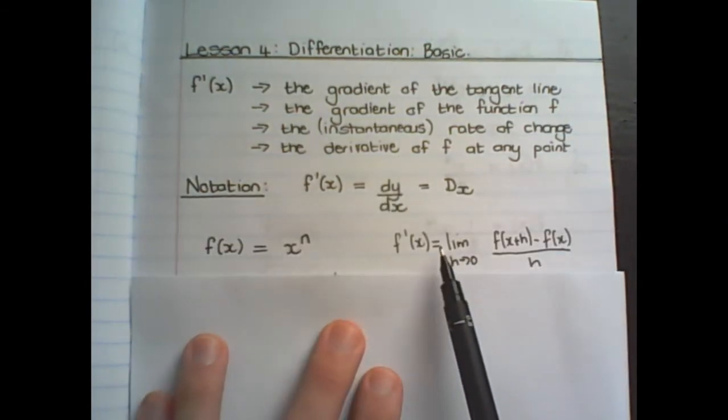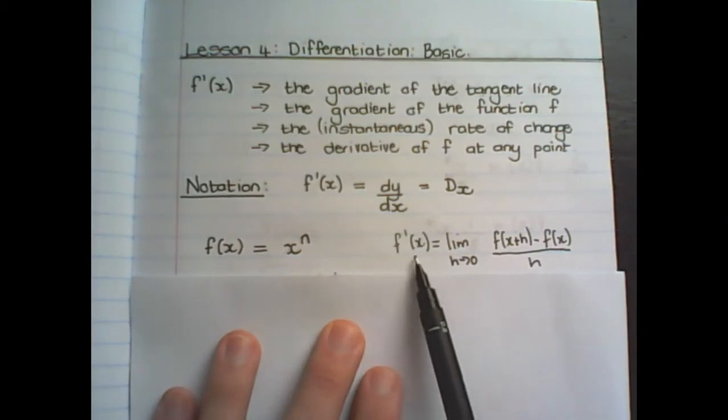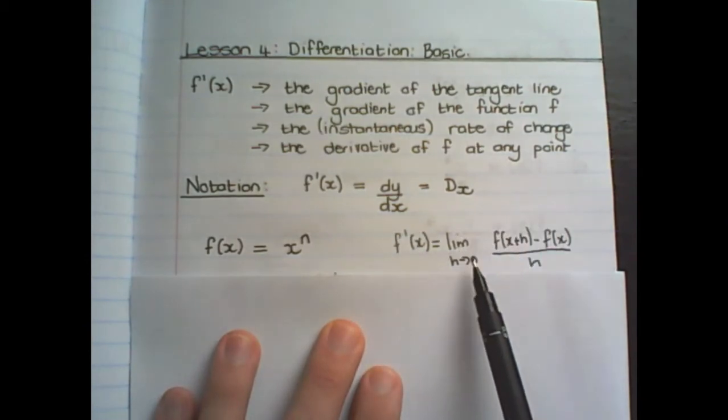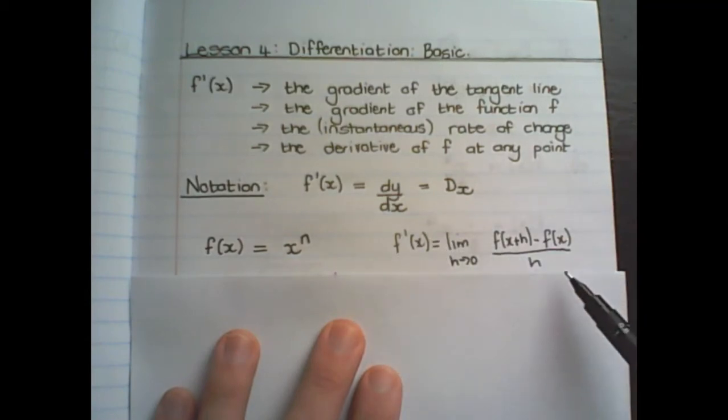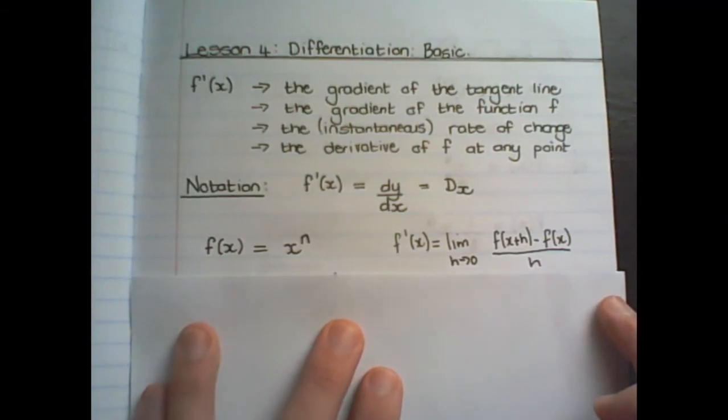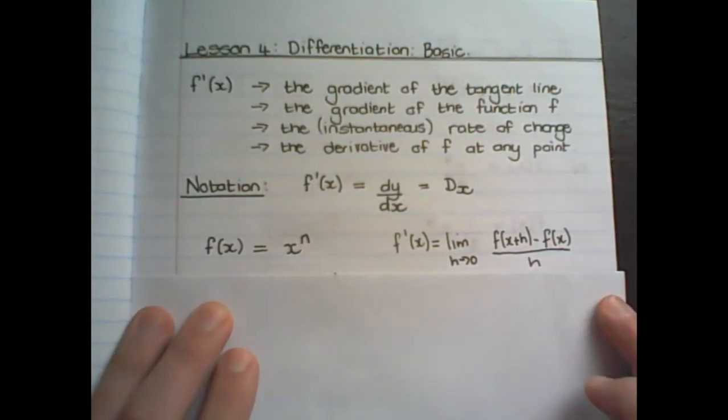In the previous lesson, we have learned how to find the derivative using first principles, meaning applying a limit of h towards 0, and then working with this equation. And this is called finding the derivative from first principles. But there are simpler ways, and we are now going to use a rule instead of this formula.